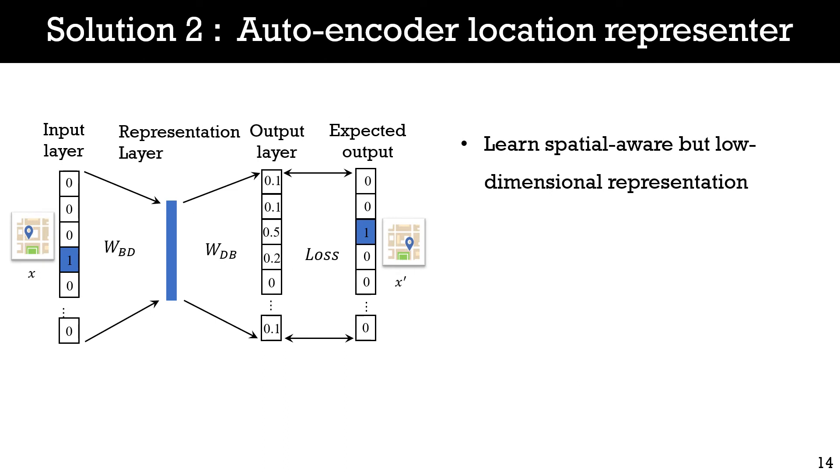To handle this problem, we propose to leverage the autoencoder model to learn spatial-aware but low-dimensional cell tower representations. The graph shows the architecture of the model. The model learns an identity mapping for the spatially close cell towers. Specifically, given a cell tower X, the model is trained to maximize the probability of predicting a spatially close cell tower X'. In this way, the representation layer of the autoencoder model can learn the representation for the cell towers.